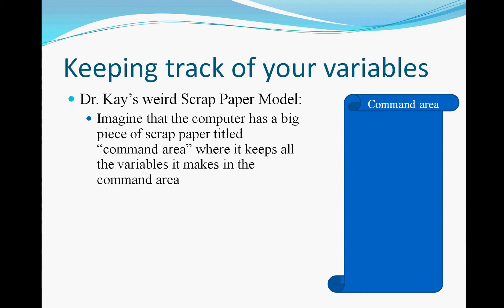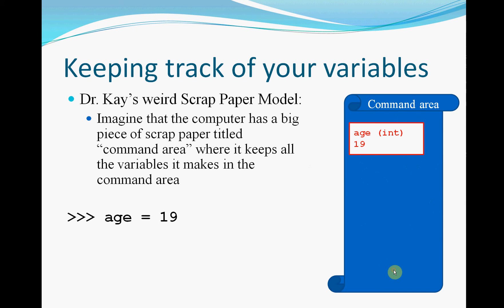I just want to go through an example of tracing that we did in class. Over here I've got my command area scrap paper where I'm going to write what happens in each step of my Python code. First we have a line in the command window that says age gets 19. I look in the command area, there's not a variable called age already, so I make a new variable called age. I know it's of type integer because 19 is a whole number, and I put the 19 in there.